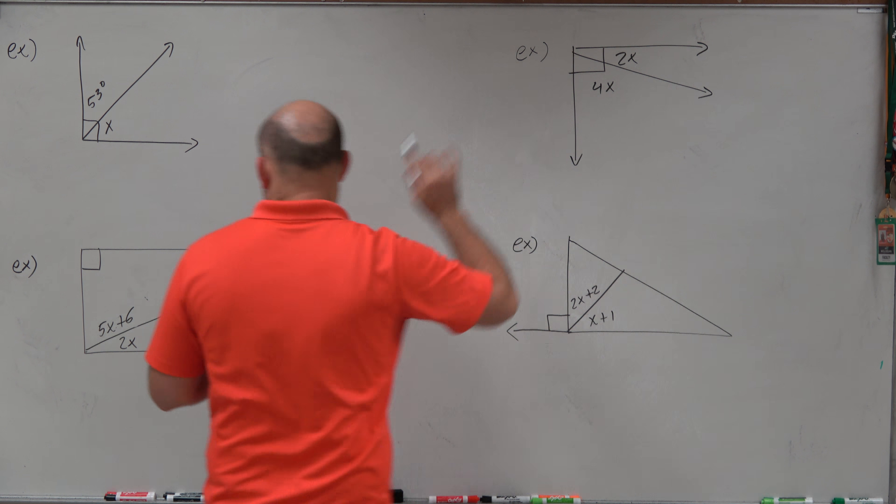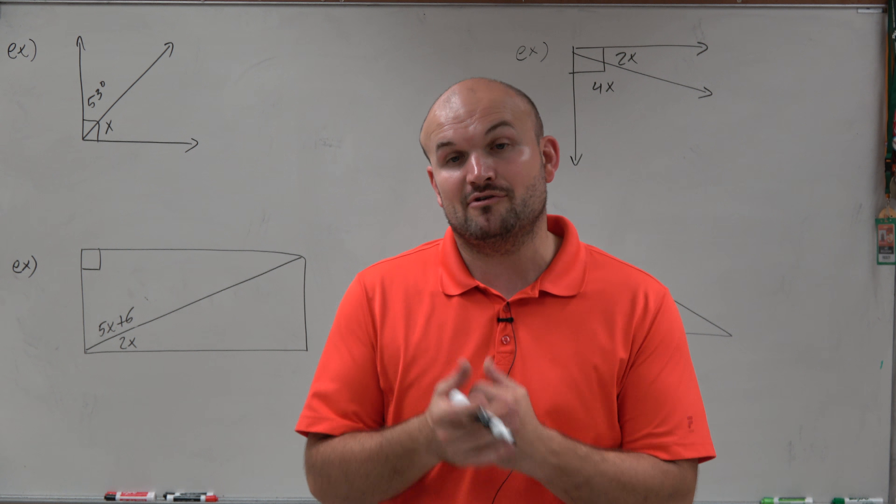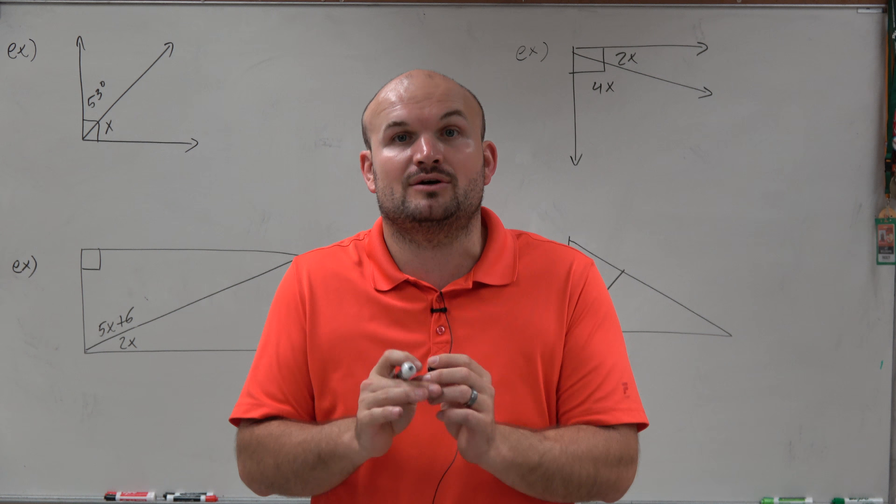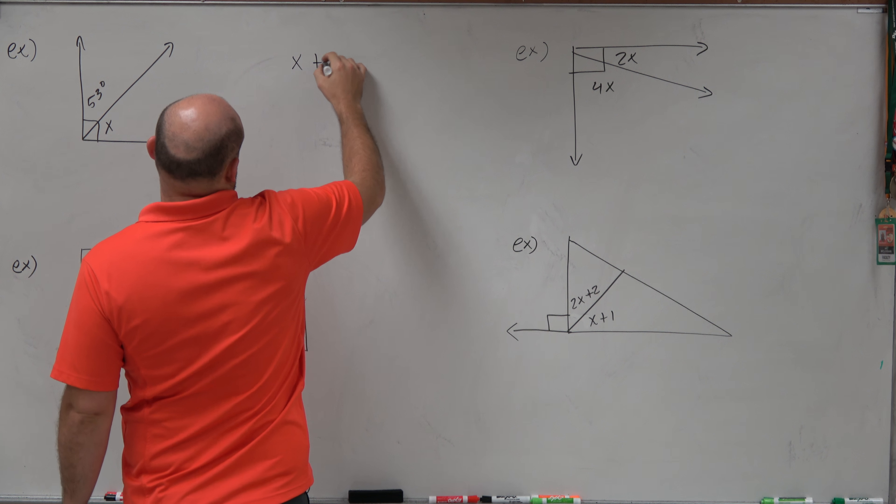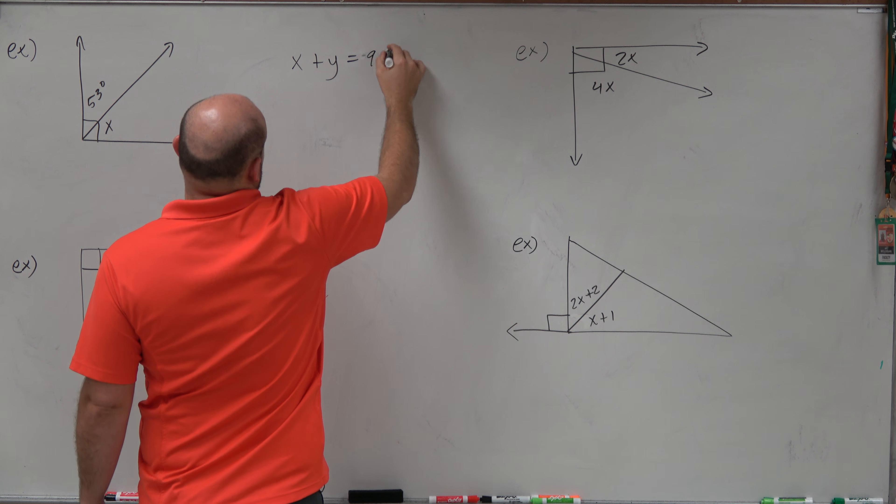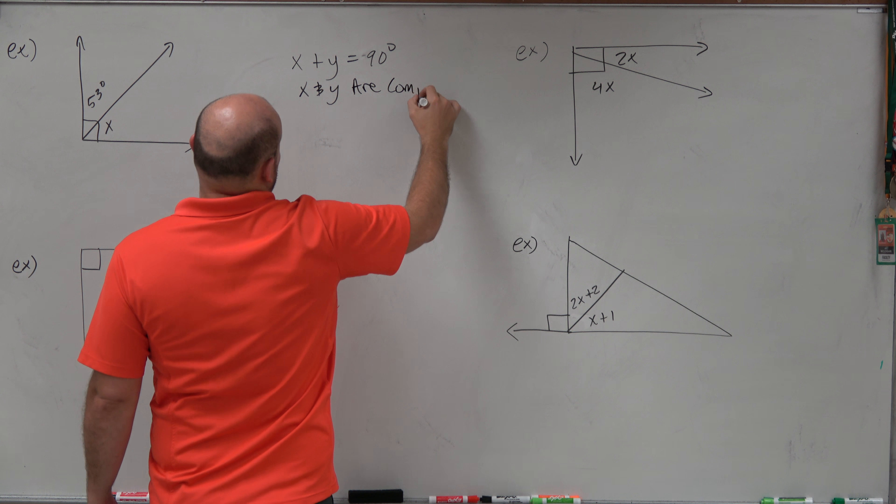Now, you can notice in each one of these, we have this little box, and that tells us we have an angle that is 90 degrees. And remember that when we have two angles that add up to 90 degrees, we call those two angles complementary. So for instance, if I had an angle x plus an angle y, and they equaled 90 degrees, then we could say x and y are complementary.